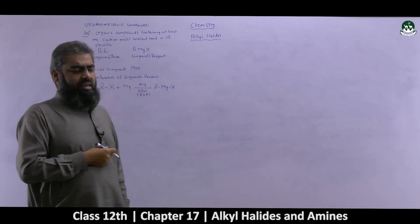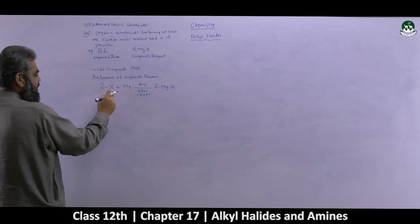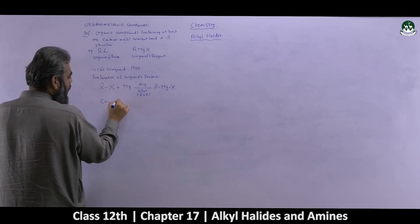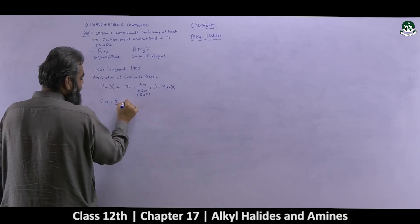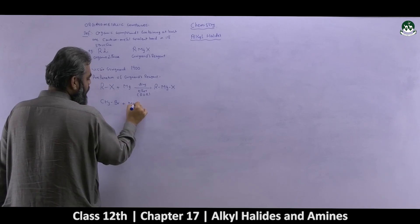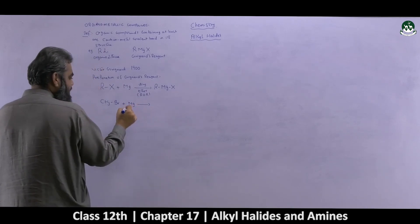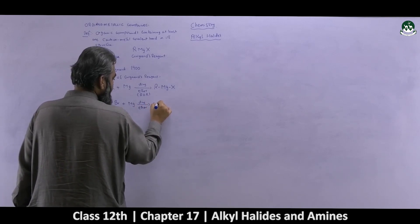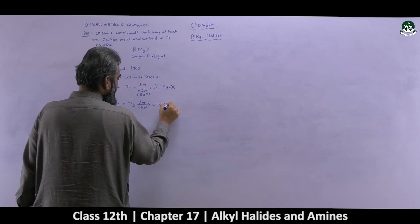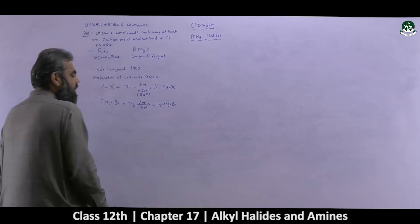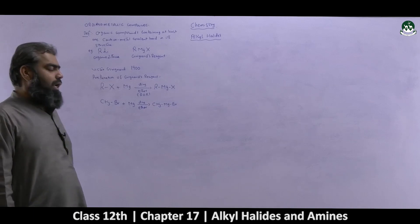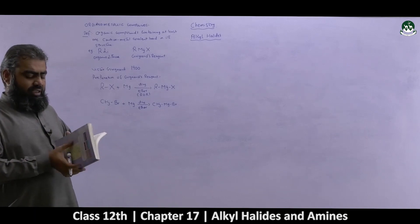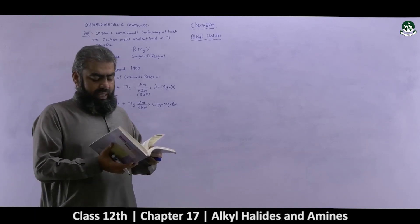To be specific about this reaction, replace R with CH₃ and X with Br: CH₃-Br (methyl bromide) combining with magnesium in dry ether produces a Grignard's reagent — CH₃-Mg-Br as the final product. These are two ways of representing the preparation of Grignard's reagent: one general and one specific.